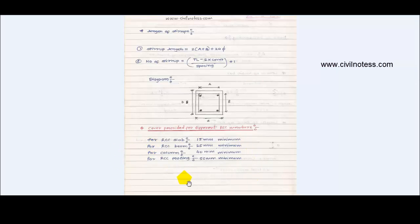These formulas are implemented in the numerical so you can understand how to use them. These are the minimum clear cover values for RCC members: slab = 15 mm, beam = 25 mm, column = 40 mm, and footing = 50 mm minimum cover required.